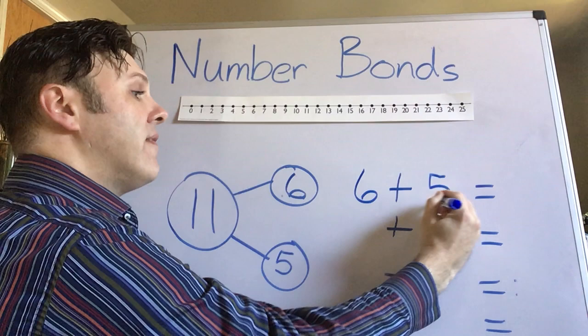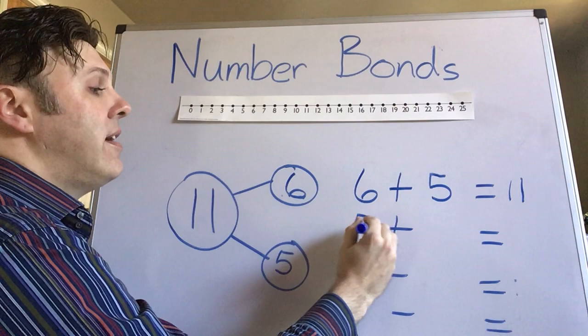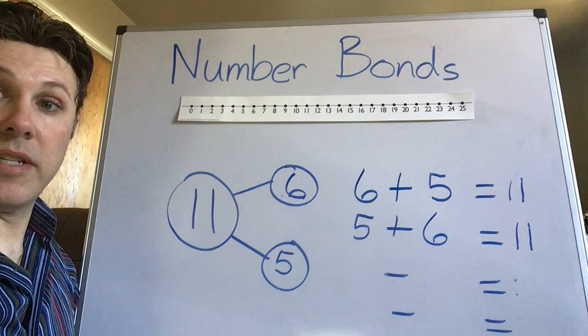So I know that if I have six plus five, I get eleven. And I also know that if I have five plus six, I get eleven.